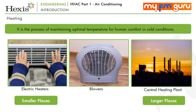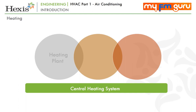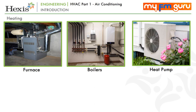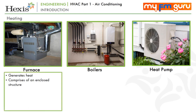A typical central heating system has three basic parts: the heating plant where fuel is converted into useful heat; a distribution system comprising pipes or ducts to deliver heat to various spaces; and controls to regulate the system. The heat source may be a furnace, a boiler, or a heat pump. A furnace is a device that generates heat in an enclosed structure, heating material to very high temperatures. Heat may be generated by burning fuel like natural gas, propane and fuel oil, or by electricity. This heat is transferred to air which is then circulated via a fan and ducts to provide warm air.